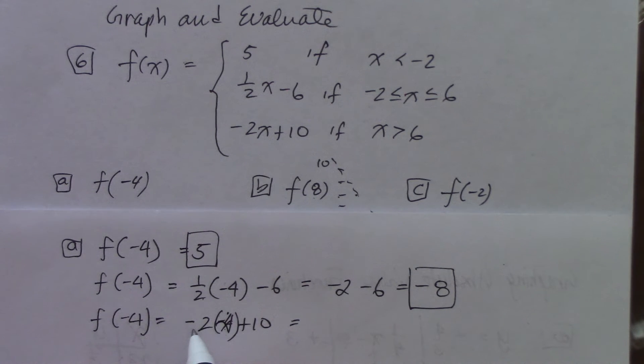Negative 2x plus 10. And now where the x is, we put negative 4, right? So negative 2 and negative 4 is positive 8, and 8 plus 10 is 18. That's all they want you to do.